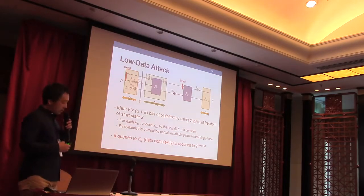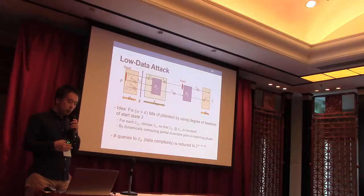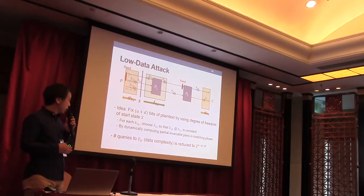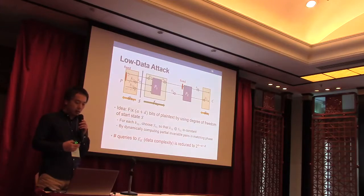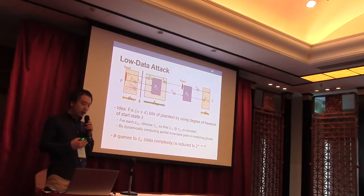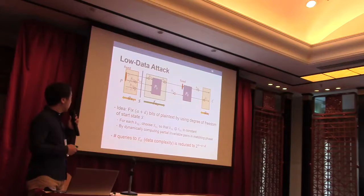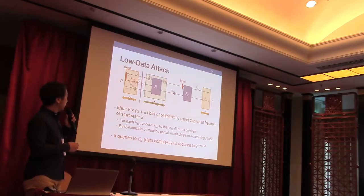By dynamically computing partial invariable pairs in the matching phase, then the number of queries to the encryption oracle EK, which is the data complexity, is reduced to 2 to the n minus a minus D because the space of the plaintext is reduced to n minus a minus D bits.